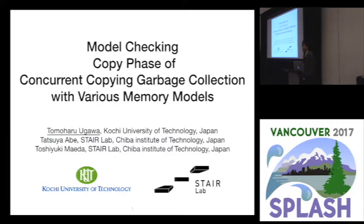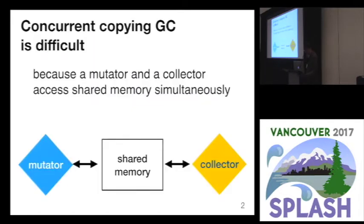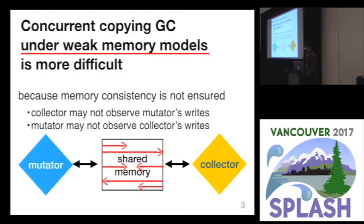This is a talk about garbage collection, so there is no gradual typing. Concurrent copying garbage collection is difficult because a mutator and a collector access shared memory simultaneously, so we need some proper synchronization. Concurrent copying garbage collection under weak memory models is more difficult